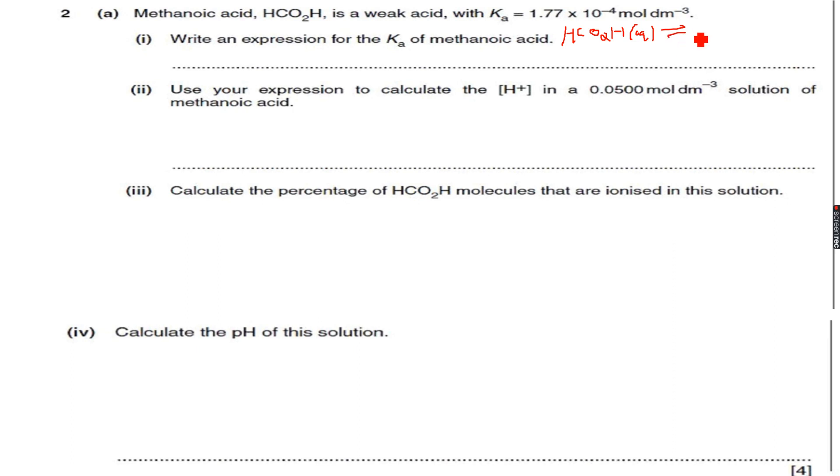So this will be a reversible reaction giving me H plus and... oh, I didn't make the concentration sign, I keep getting confused, I'm sorry about that. So we get H plus plus HCO2 negative, both in aqueous phase. This is the dissociation of this acid. Then Ka will be equal to the concentration of H plus times the concentration of HCO2 negative ions, which are methanoate ions, over the concentration of methanoic acid.